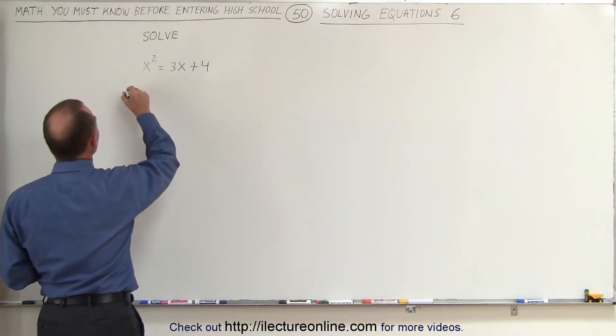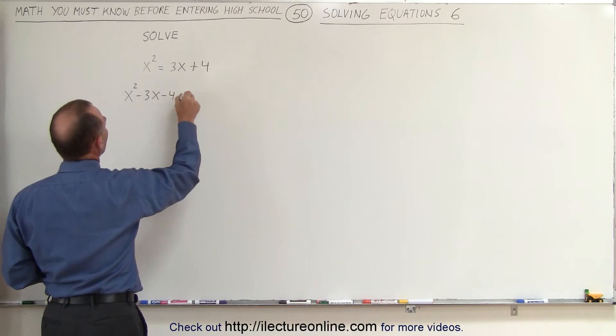So in this case, we end up with x-squared minus 3x minus 4 equals zero.